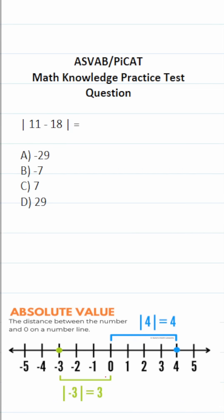This math knowledge practice test question for the ASVAB and PyCat says the absolute value of 11 minus 18 equals. So we're trying to find the absolute value of 11 minus 18.